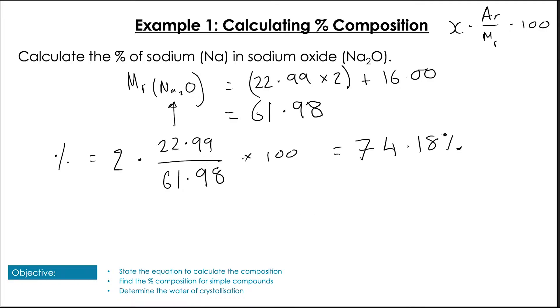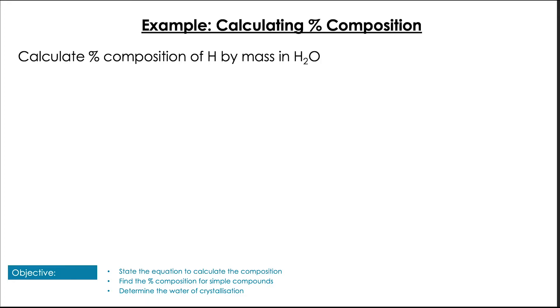Okay, let's do another example before we let you loose on some questions. So here, calculating the percentage composition of hydrogen in water. So we're going to follow the same process that we did in the last question. We're going to calculate the molecular mass first, which is 18.02, and then we're going to do 2, because there's 2 hydrogens in water, multiplied by 1.01, divided by 18.02, multiplied by 100, which is 11.2%. Awesome.